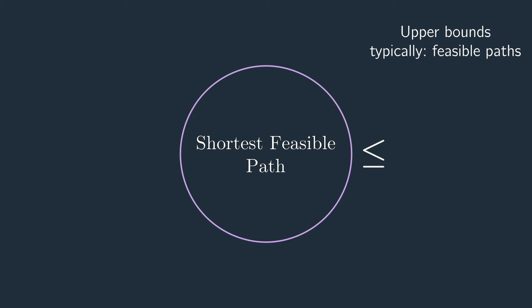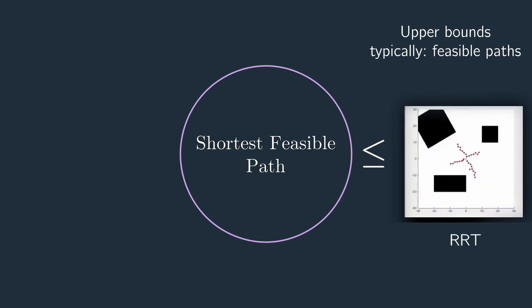In this category, we have algorithms based on sampling techniques, where you expand an accessibility graph by sampling points in the space according to some heuristic. Now the problem reduces to finding a path inside this newly constructed graph. RRT is such an algorithm.